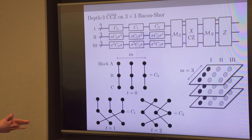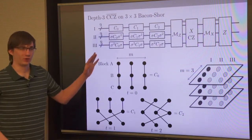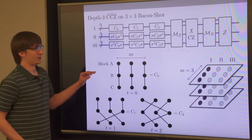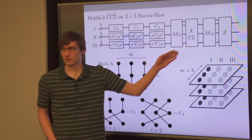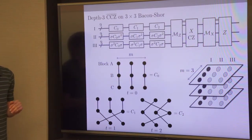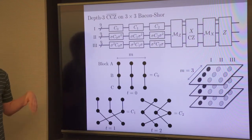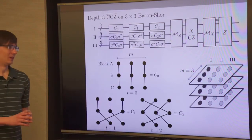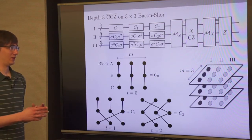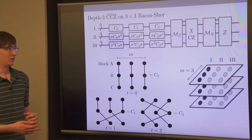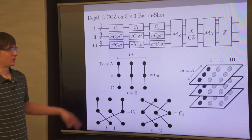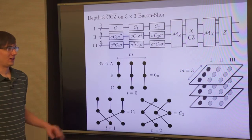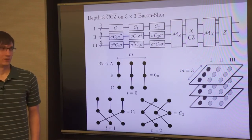The neat thing is this requires no post-selection at all, because you prepare the ancilla states for Steane error correction by just making three-qubit cat states. If you wanted to go to higher distance codes, you could concatenate this and it would have a threshold, and you'd still need no post-selection. So if you had an implementation that allowed concatenation of Bacon-Shor codes, you would never need any post-selection in your fault-tolerant computer.